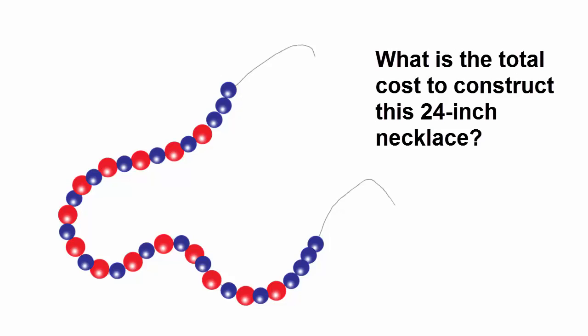Let's start out with a visual example of decomposition. Here is a necklace made of red beads, blue beads, and thread, each with a different cost. The problem? Determine the total cost to construct this 24 inch necklace. Think for a minute. How do you set up this problem? What information do you need?